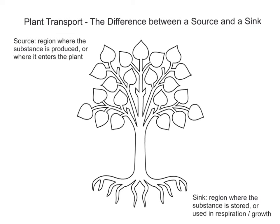Hello everyone. In this video on the topic of plant transport, we're going to be looking at the key differences between a source and a sink. These are two terms — source and sink — that we really use when looking at translocation, which by definition is the movement of soluble carbohydrates, so things like glucose and sucrose, and amino acids via the phloem.